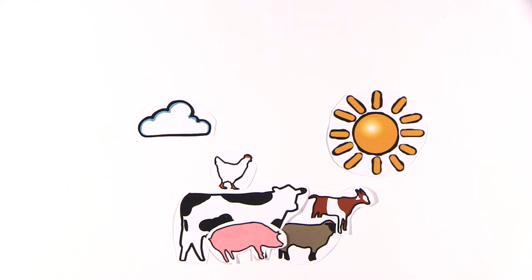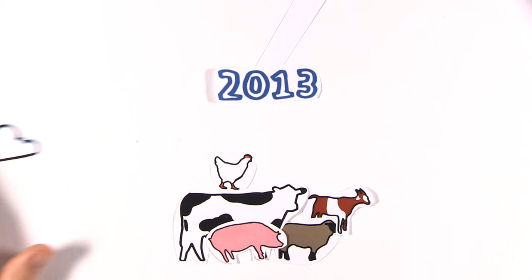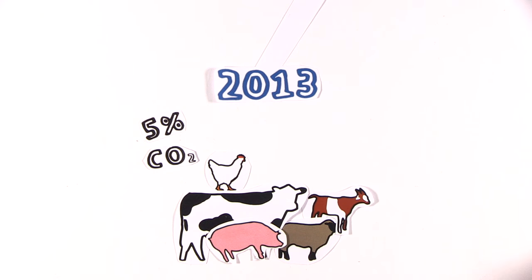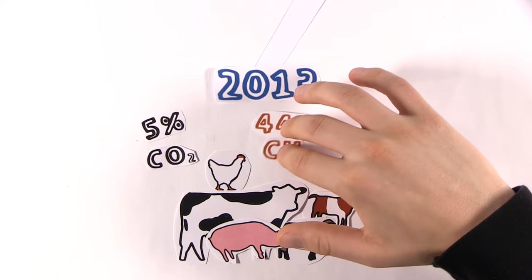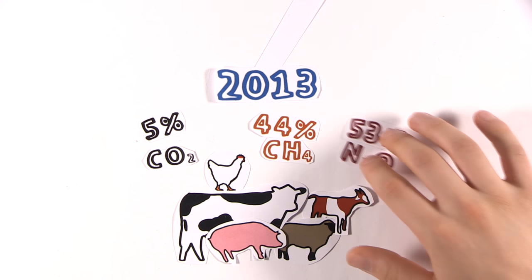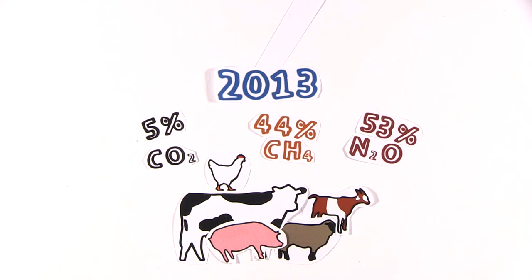Livestock also has a severe impact on the atmosphere of our planet. In the year 2013, it was calculated that livestock produces 5% of carbon dioxide, 44% of methane and 53% of nitrous oxide of all man-made emissions.